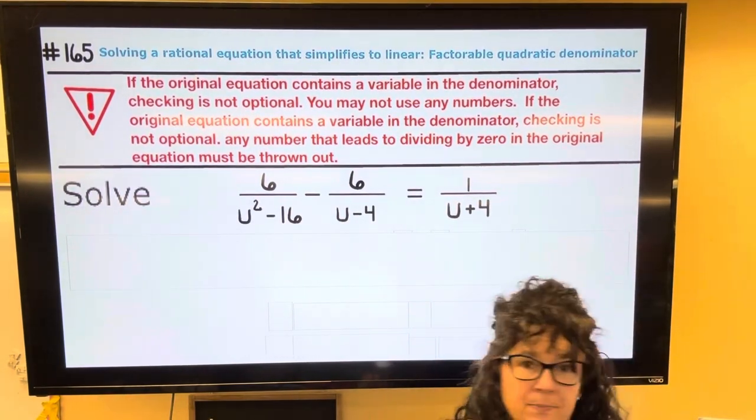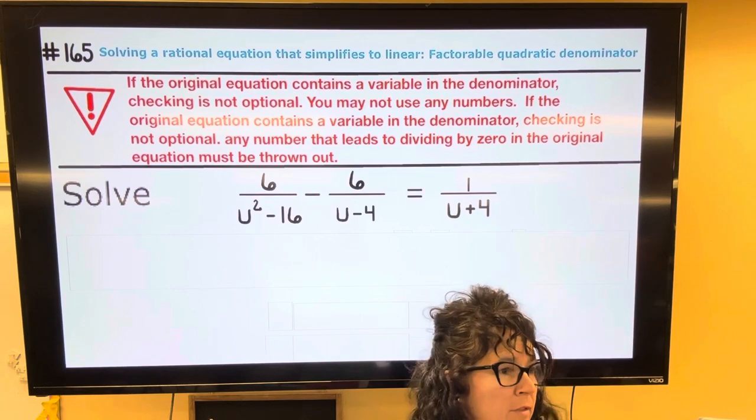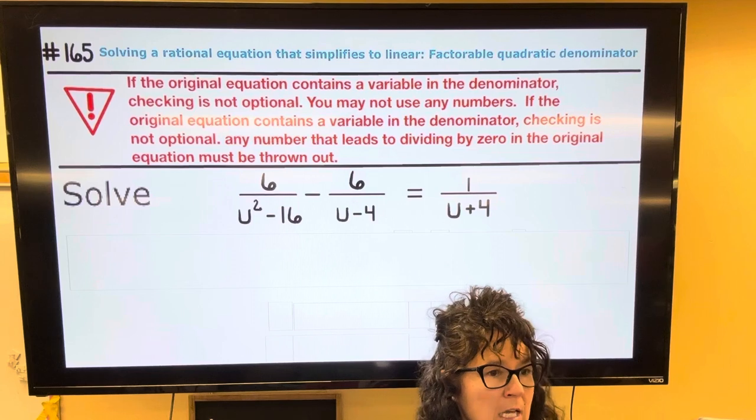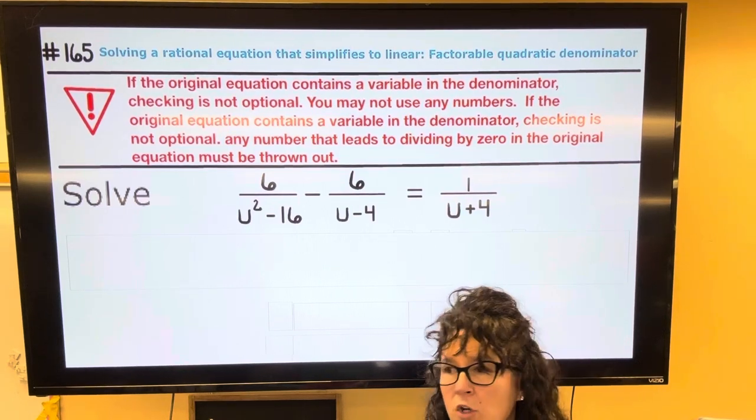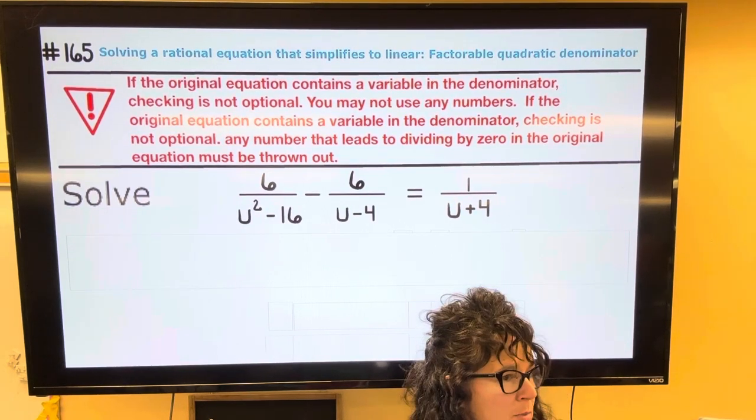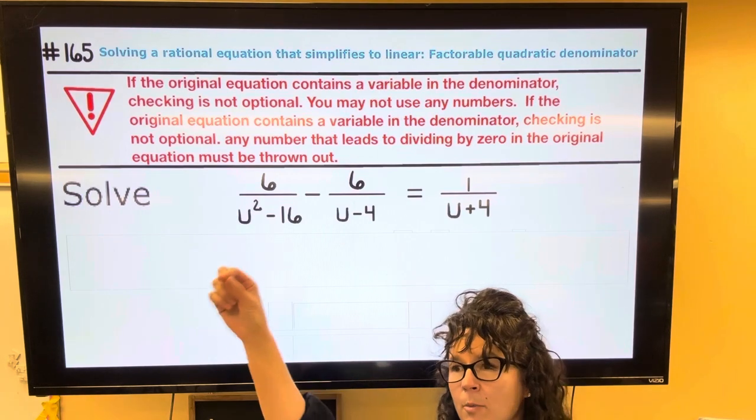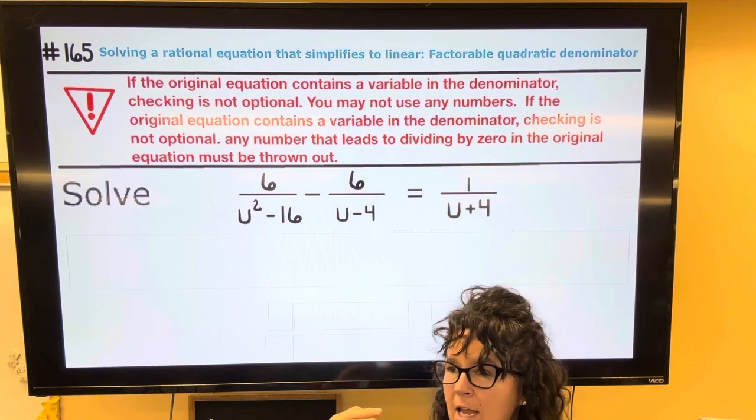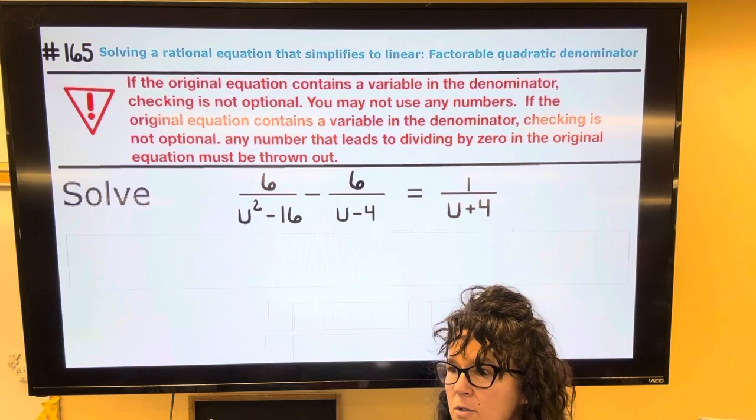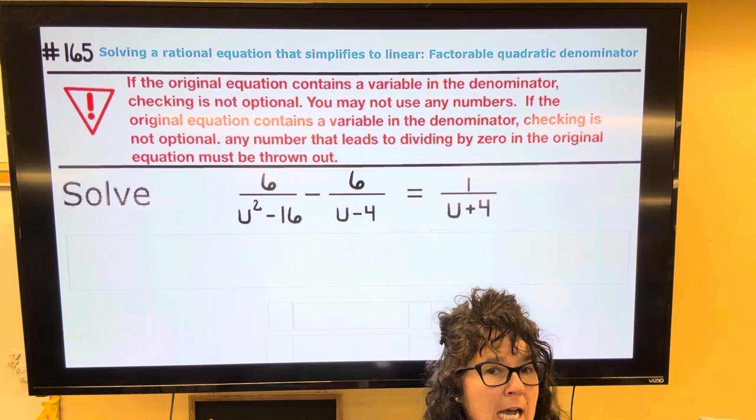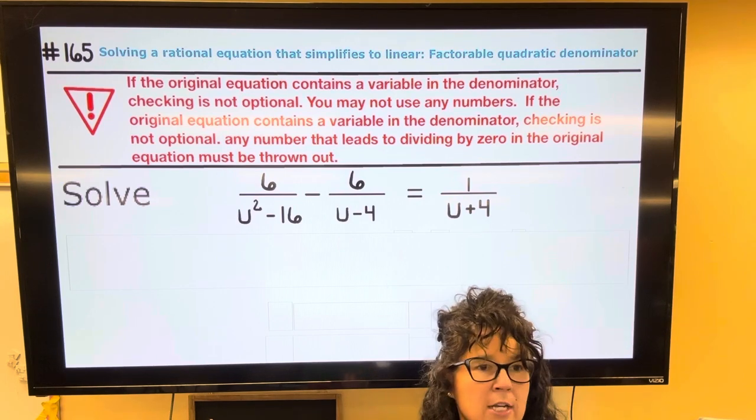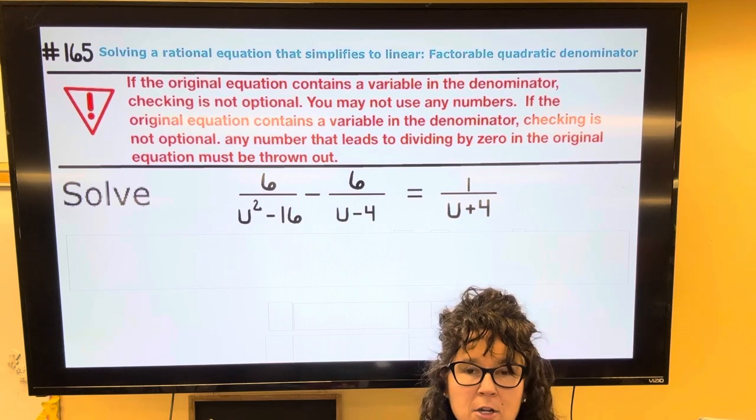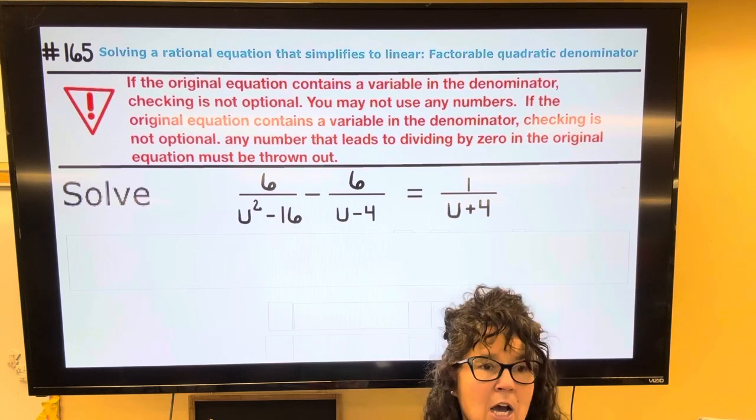We're going to solve this equation, but one of the things that you want to keep in mind is that sometimes checking your answers is not optional. After going through Algebra 1, sometimes you start to think that if I substitute the number back in as long as I did all of my work correctly, then the answer I got is going to check out. But any time you end up looking at an equation and that original equation has a variable in the denominator, checking your answer is not optional.